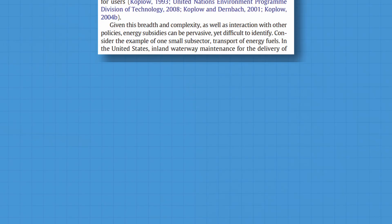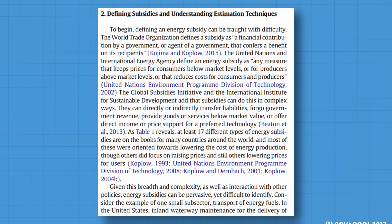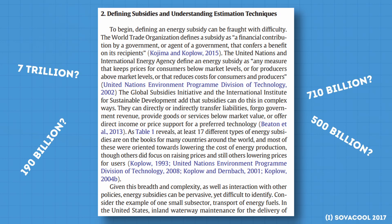Whilst we tend to think of subsidies as cash grants, they can take many different forms, such as tax cuts, subsidised credit, and guarantees. However, definitions of what subsidies actually take into account can vary, which is one of the reasons why we see subsidy numbers being quite different.